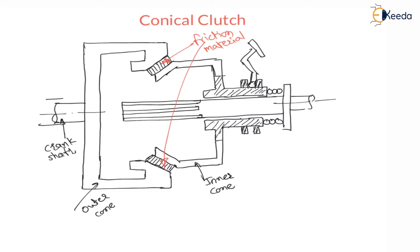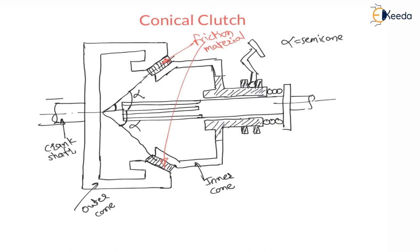These friction linings are inclined at an angle with horizontal as well as vertical. The inclination of these friction linings is called alpha. This inclination angle alpha is called the semi-cone angle.